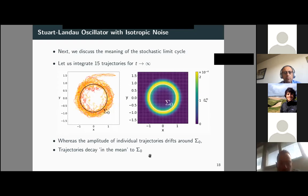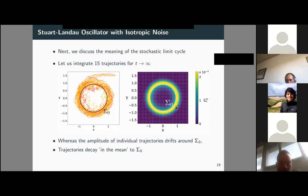We also studied how this stochastic limit cycle relates to the maximum of the stationary probability distribution, finding that it is nearby but does not exactly correspond to the maximum.